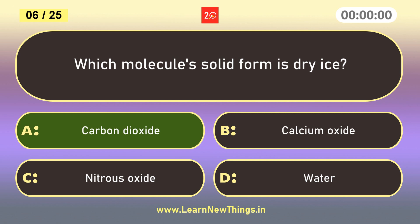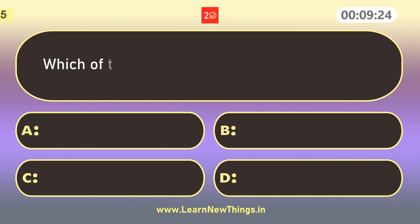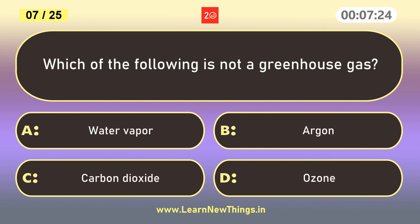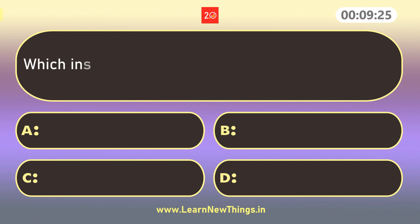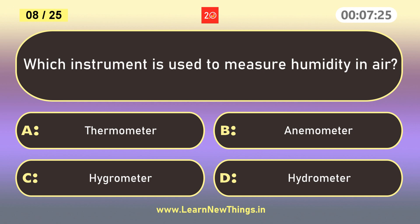Carbon dioxide. Which of the following is not a greenhouse gas? Argon. Which instrument is used to measure humidity in air? Hygrometer.